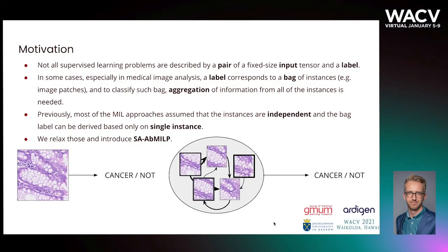Multiple instance learning is a weakly supervised image classification problem where we have a bag of images and a label corresponding to the bag. Current approaches are based on the standard MIL assumptions where the instances within a bag should be independent and only one instance can be used to derive the label. In contrast, our approach can find the relationships within a bag and is adjusted to the presence and threshold-based MIL assumptions.